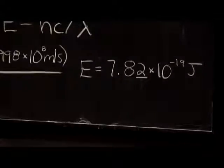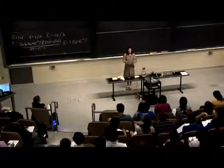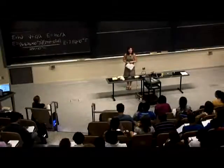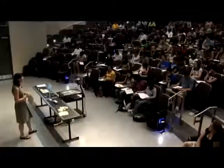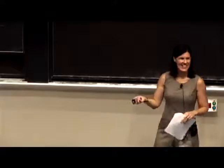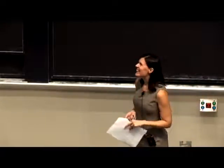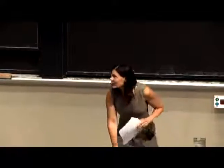So if we think about the work function for zinc, and the work function for zinc is 6.9 times 10 to the negative 19 joules, do we expect that when we shine our UV light on the zinc we'll be able to eject electrons? What do you think? Yes? Good. OK. Anyone disagree? No. OK, and that's correct, because each photon of light actually has more energy than is needed to eject an electron. So we would expect to see electrons ejected with the UV light source.